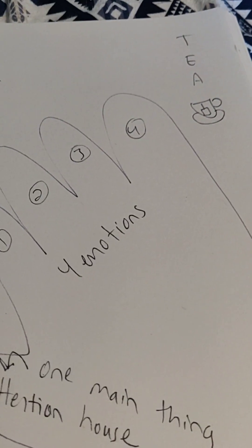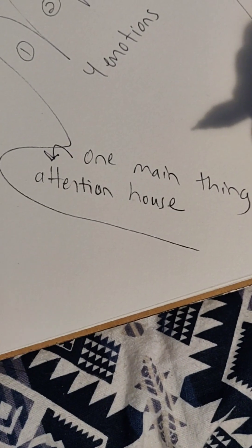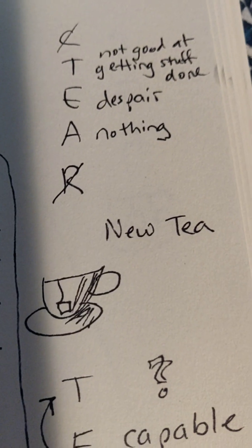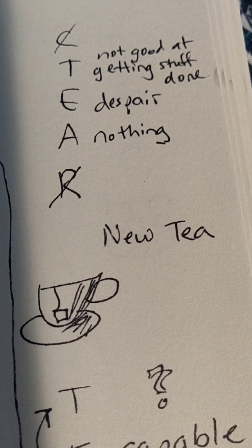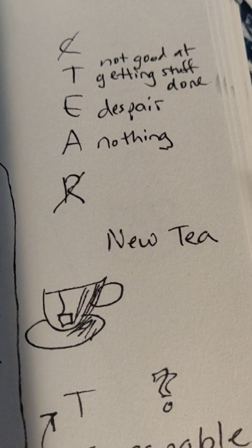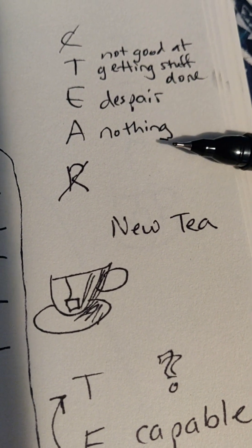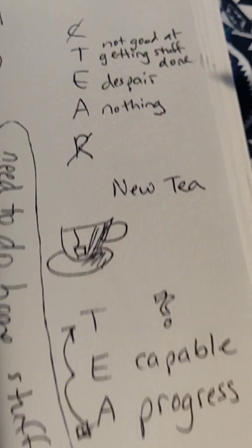So for me, my thought about my one main thing was 'I'm not good at getting stuff done.' My emotion was despair, and then my action would be nothing. So then I thought, no, I really want to change this.